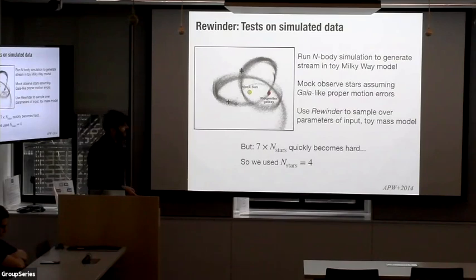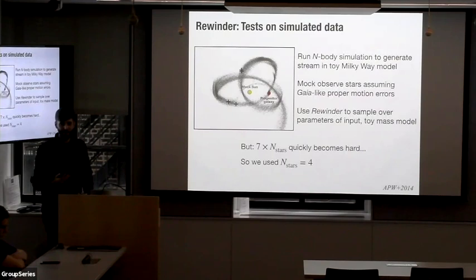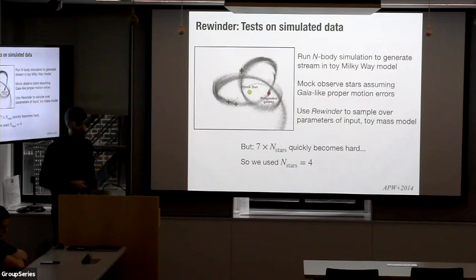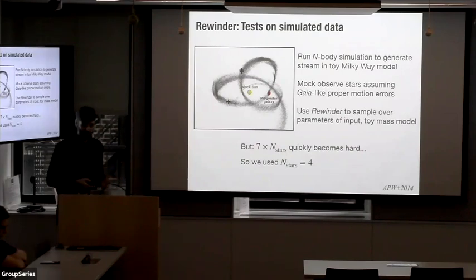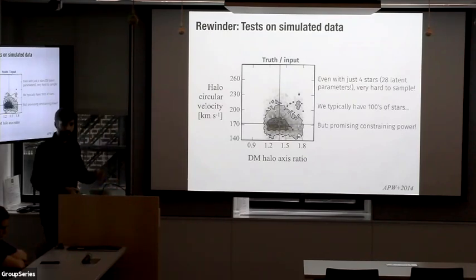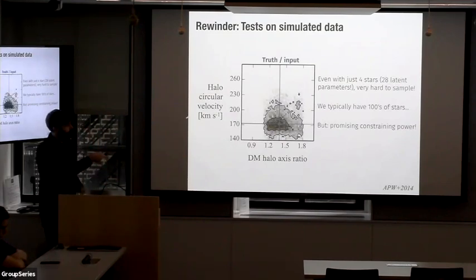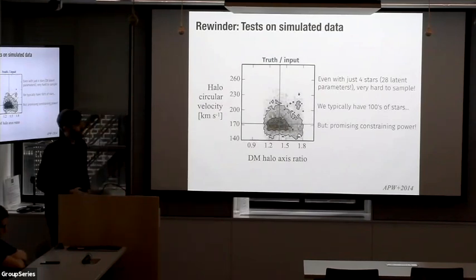One caveat is that we did this with very few numbers of stars — just four — and that's because of the factor of seven: the number of latent parameters scales like seven times the number of stars we want to use. So we stuck with N equals four, which is already a lot of parameters. But still the results are pretty promising: just four stars in a stream measured with Gaia-like uncertainties, with good distances, allows us to recover the input circular velocity of the halo and something about the shape as well. We ran this in a prolate dark matter distribution and we can recover that using just these four stars.